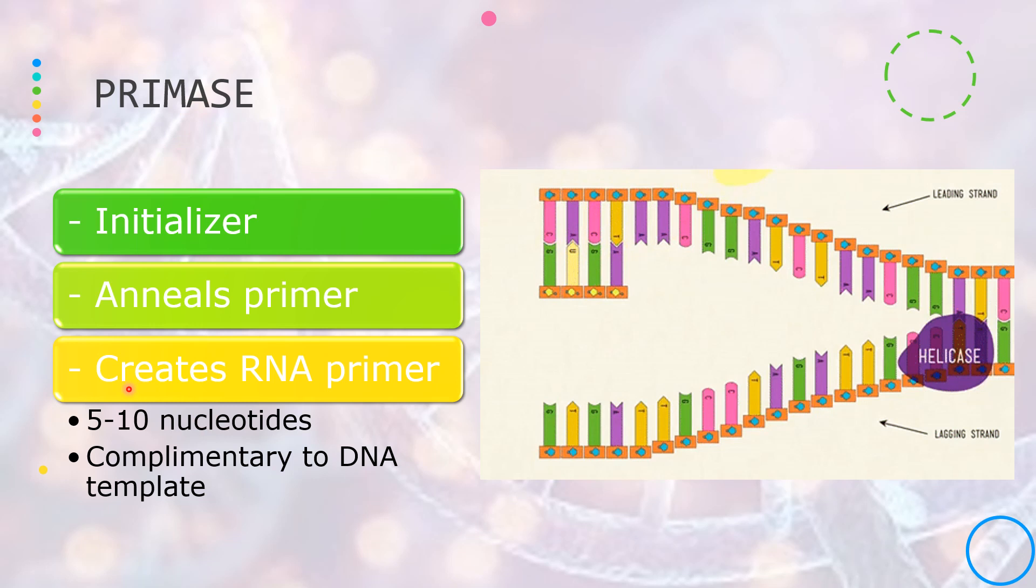The primase is in charge of creating a primer which is made up of RNA also known as the RNA primer. This RNA primer is made up of 5 to 10 nucleotides which are complementary to the template DNA.